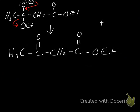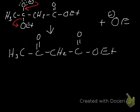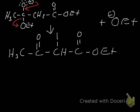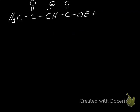The ethoxide in solution is going to attack one of the hydrogens on the central CH2 group — the carbon between the two carbonyls. Those electrons go back onto that carbon, causing another carbanion to form. So we now have a carbanion with a negative charge sitting between the two carbonyl groups.